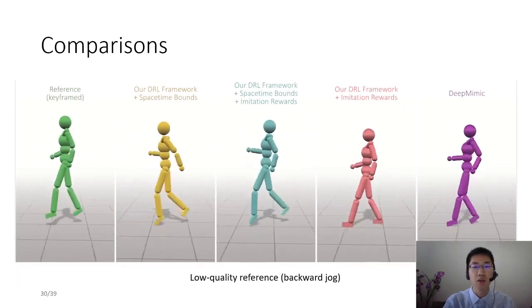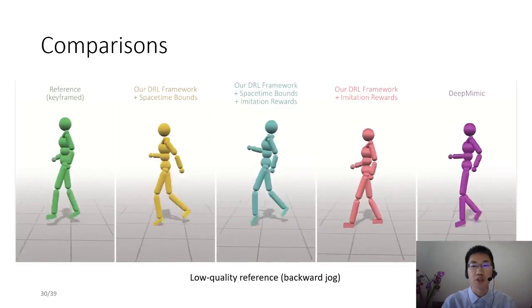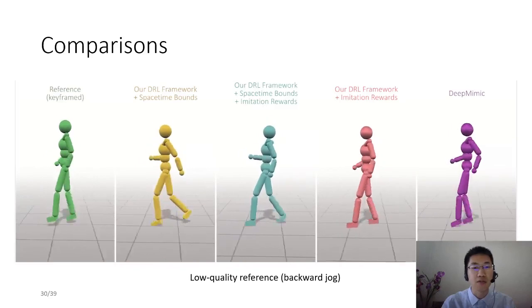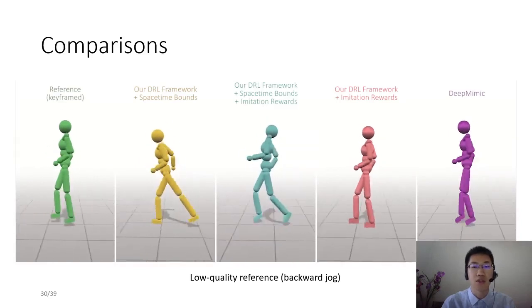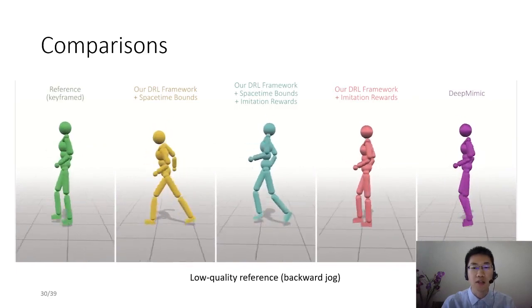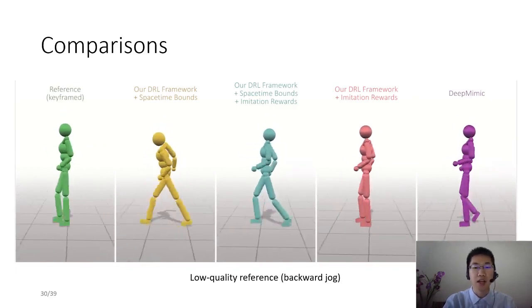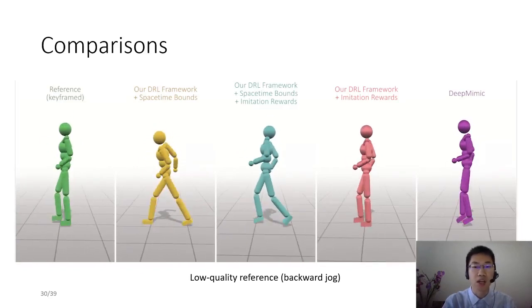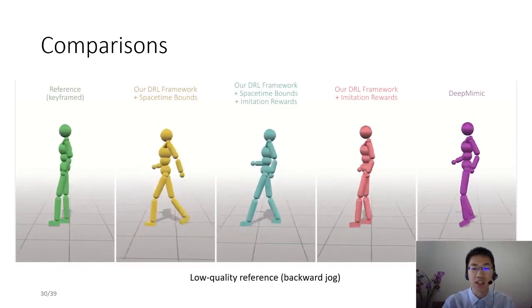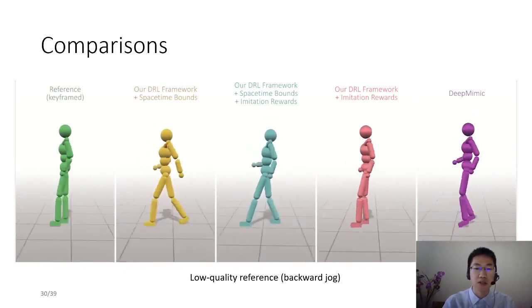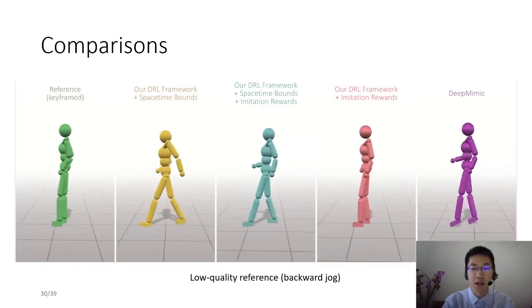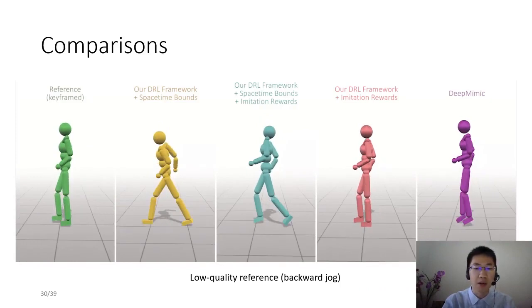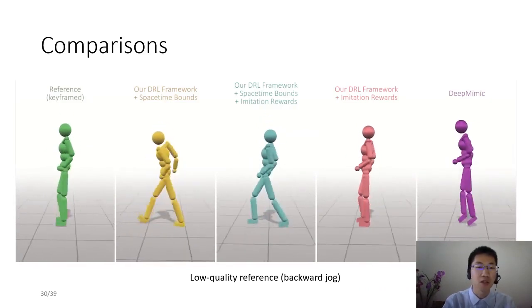Second, for low-quality reference, our spacetime bounds treat all trajectories within the prescribed neighborhood equally, so that deviation from low-quality reference is easier in order to achieve robust skills. In contrast, tracking-based methods have to compromise the low-quality of learned skills for more accurate tracking of the bad reference to gain higher rewards. For backward jogging example, since the reference is generated by manually designing sparse keyframes and thus is of low-quality, the result of using spacetime bounds only is even better than combining with imitation reward.